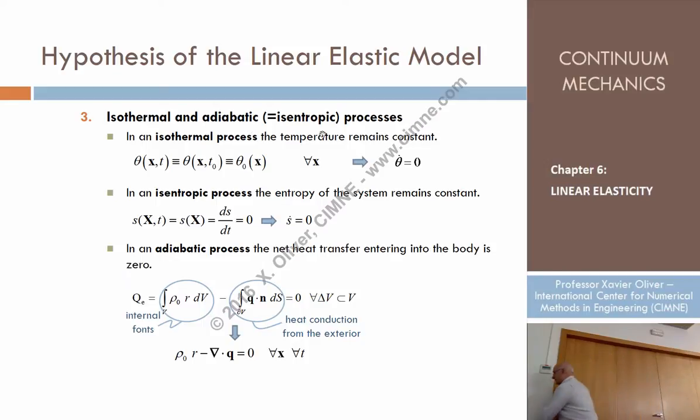We consider that the deformation processes of our material are both isothermal and adiabatic. What does isothermal mean? Well, the word is familiar to you. Iso comes from the Greek equal, thermal equal temperature. So we assume that the temperature for a given point, for a given point, I don't refer now as spatial or material points because they are the same. For a given point along time is already the same. So temperature doesn't depend on time.